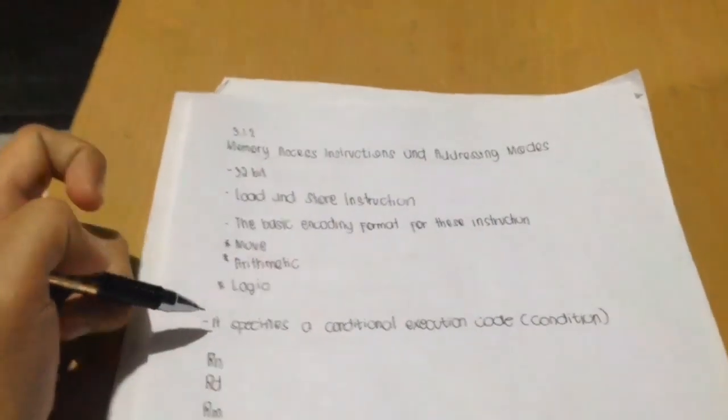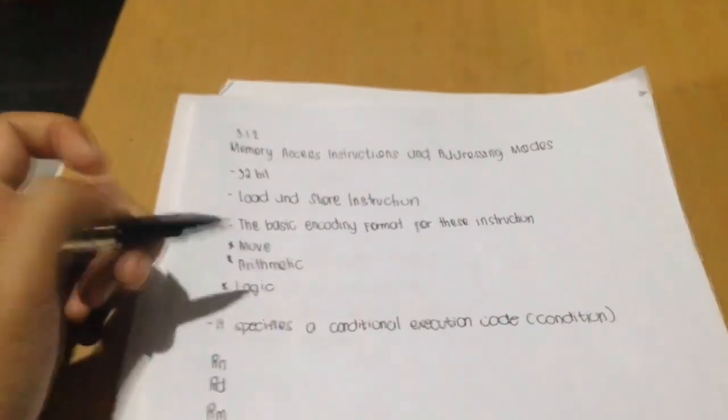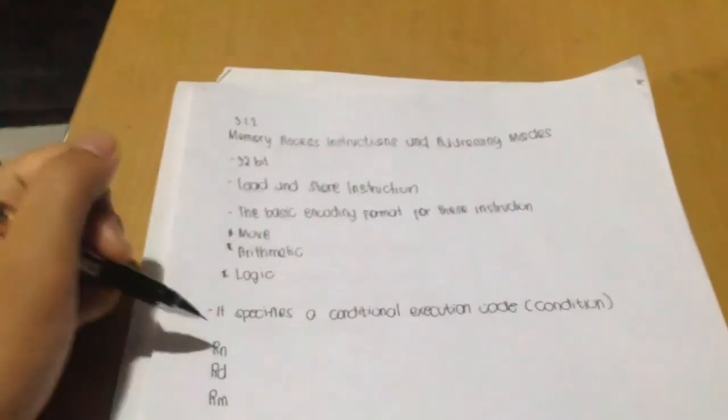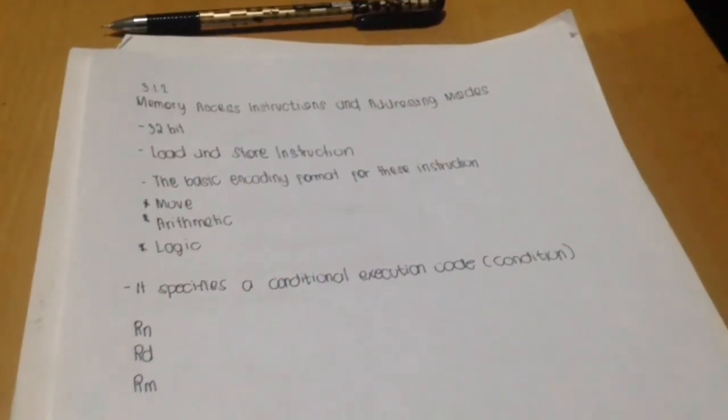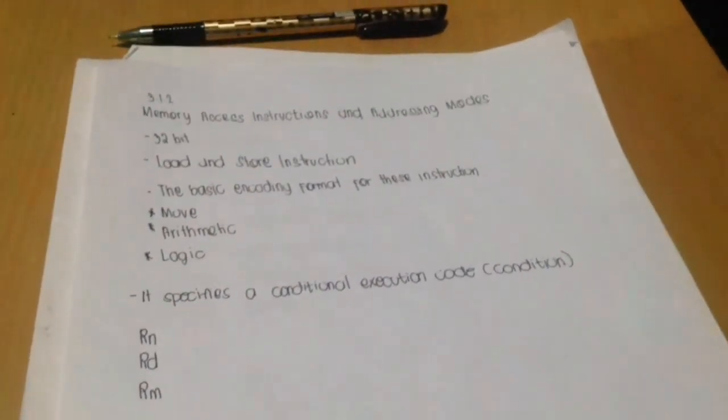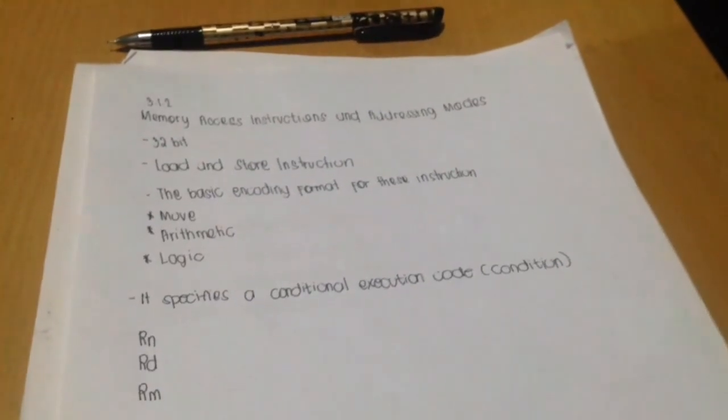It also specifies a conditional execution code RN, RD, and RM. If register RM is not needed, the other info field extends to bit B0.